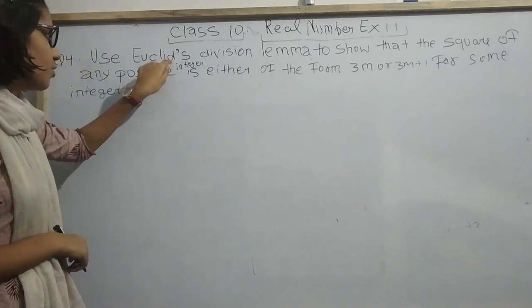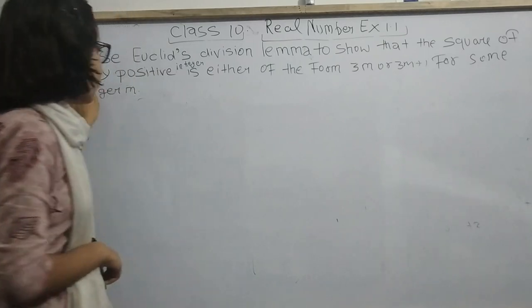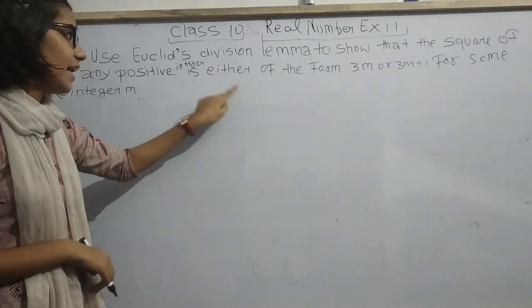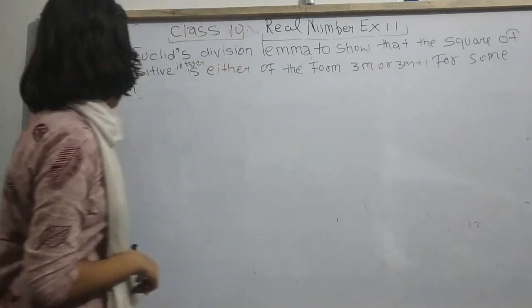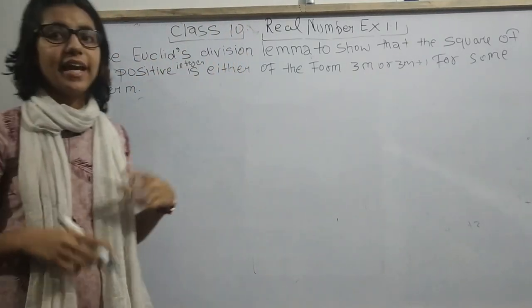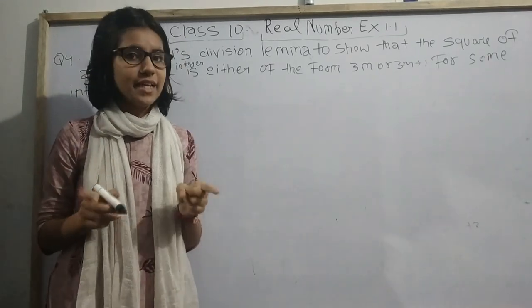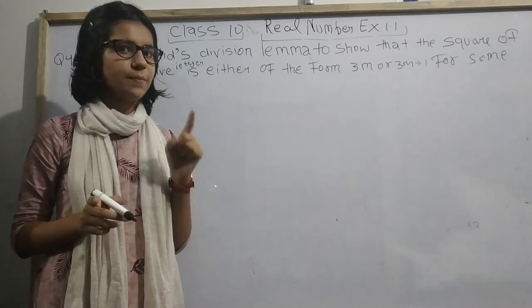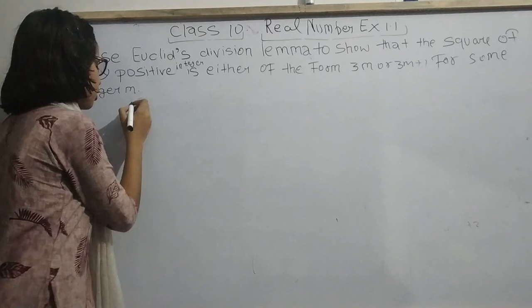Question number 4: Use Euclid's division lemma to show that the square of any positive integer is either of the form 3M or 3M plus 1 for some integer M. Euclid's division lemma states A equals BQ plus R, where A is our dividend, B is our divisor, Q is quotient, and R is remainder. Now let us move to the solution.